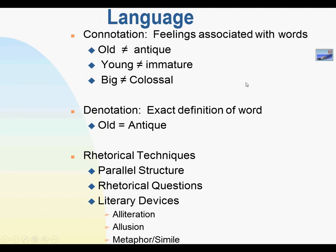Let's talk a little bit about language. If you think about the word 'old' versus 'antique,' how are these words different? Well, obviously, 'old' has more of a negative connotation — it pertains to something that people would prefer not to have — whereas 'antique' is related to something more positive, something that has value. So if you're going to refer to a desk as old, it may not be something someone might want, whereas if you say it's an antique, people might want that.